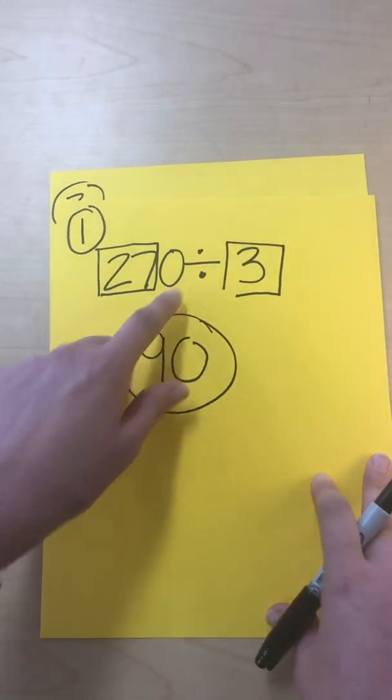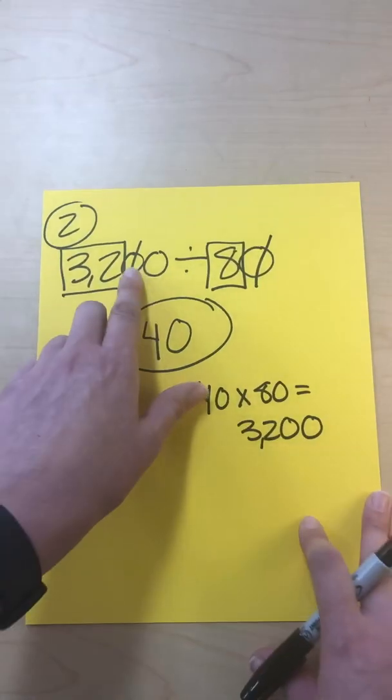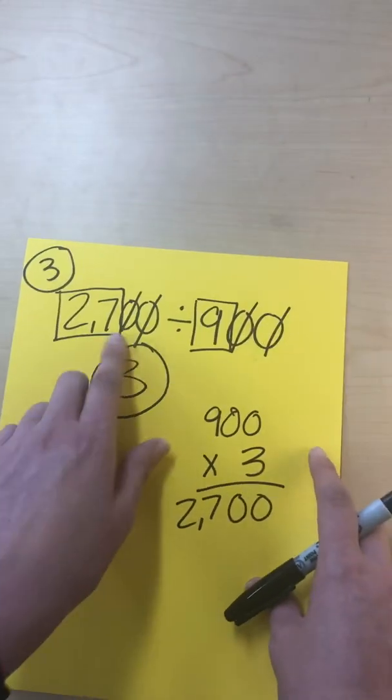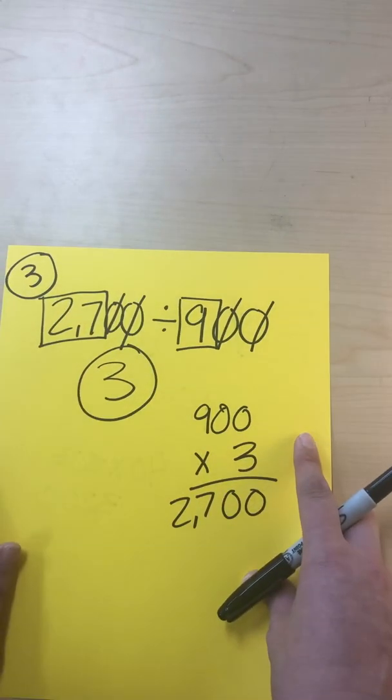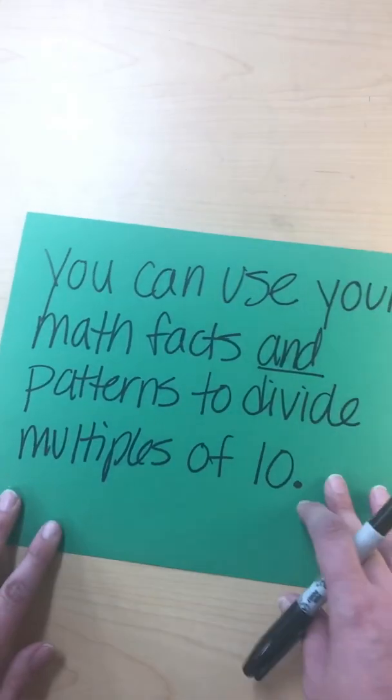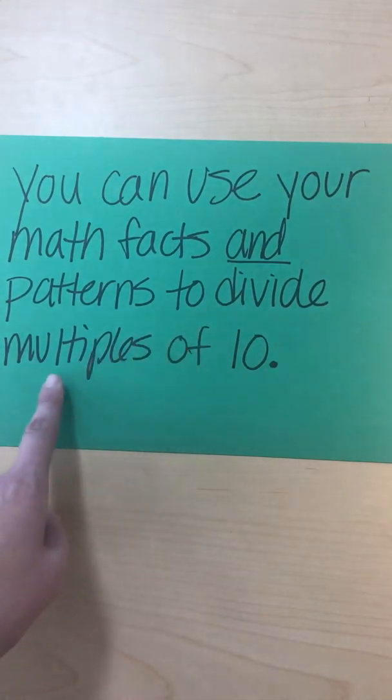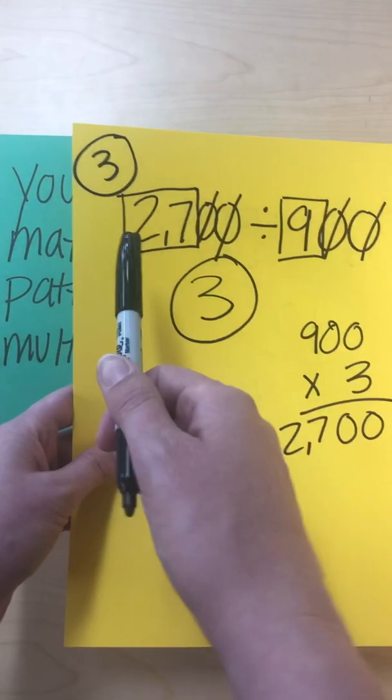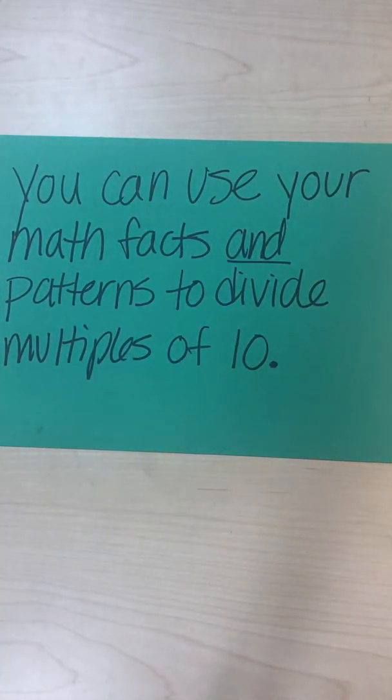But remember, the big difference is this zero just drops down because we have nothing to cancel out. On these ones, we have to cancel out zeros because we're dividing now. We're not just multiplying. And we cancel out those zeros with each other. If I had one left, I would drop it down, but I didn't have anything left. Remember, this pattern will work just by using your math facts. And it only works if you're dividing by multiples of 10. So as you can see on these, a lot of these were multiples of 10. 10 went into all those numbers. So we were able to use that pattern. Good luck.